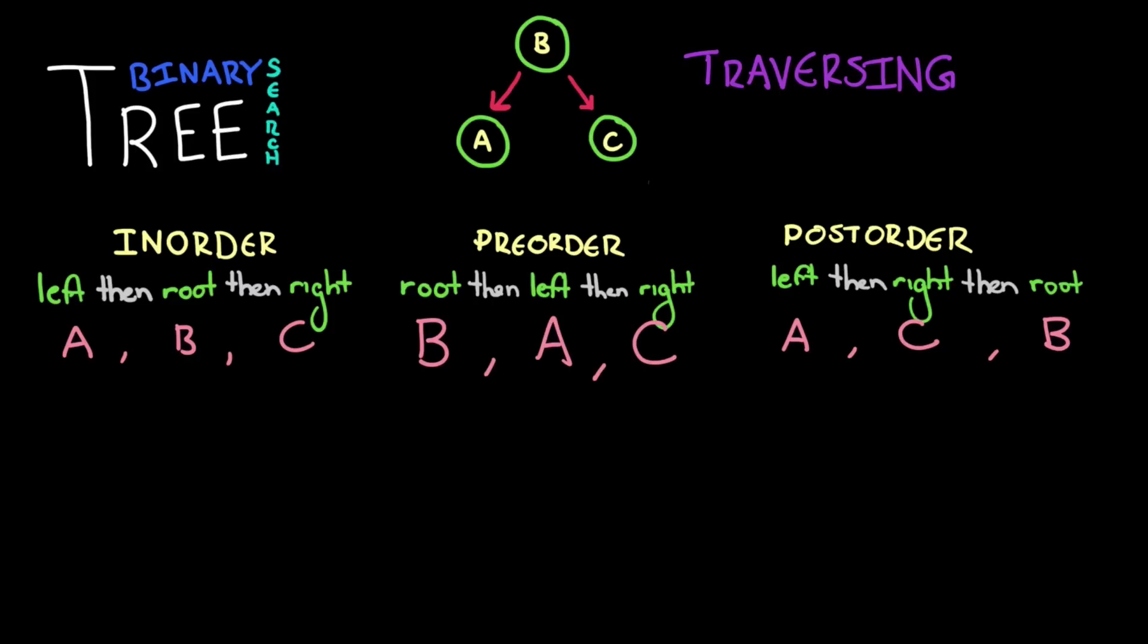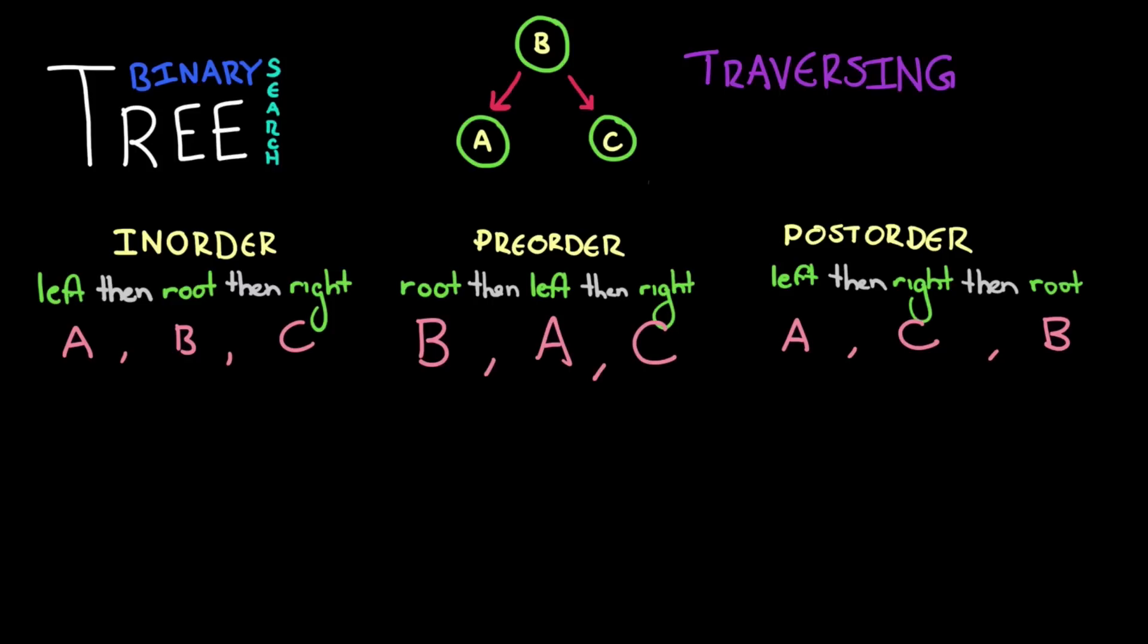Typically in binary search trees we want to do in-order traversals because that actually allows the nodes to be printed in order. So for example on this tree here it was just a 1, a 2, and a 3, the nodes in an in-order traversal will actually be printed out in the order 1, then 2, then 3. So typically we'll see in-order traversals.